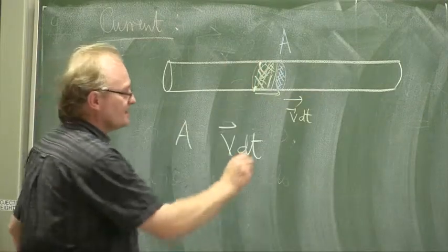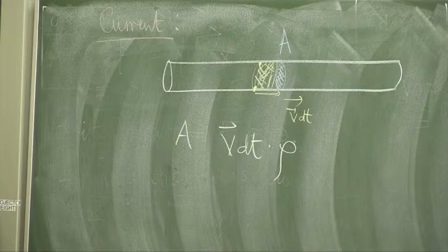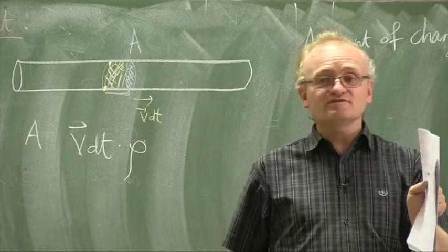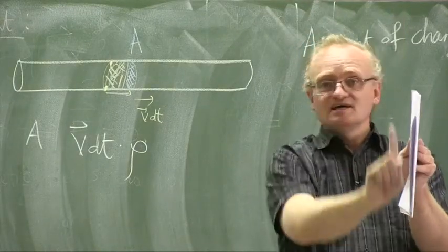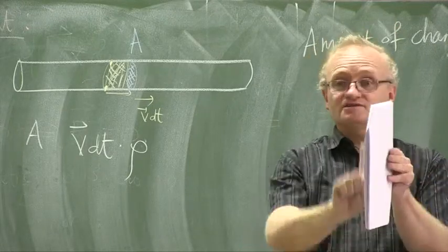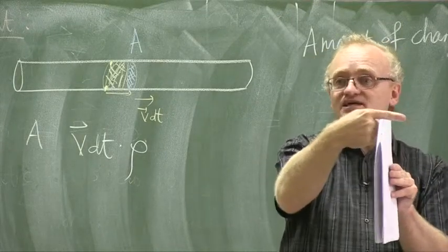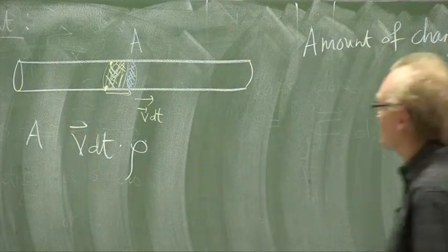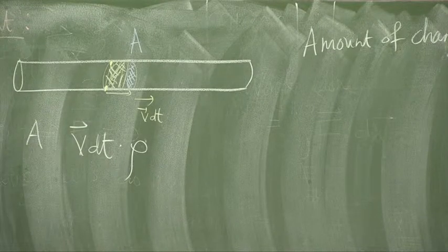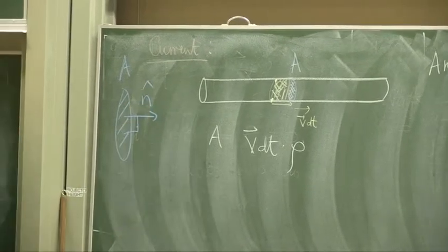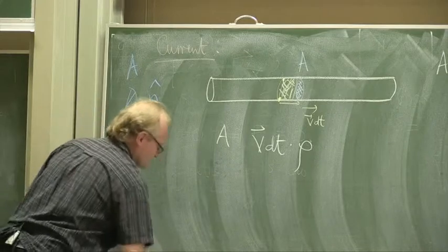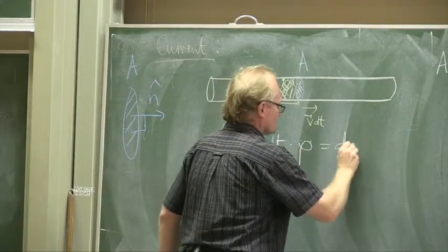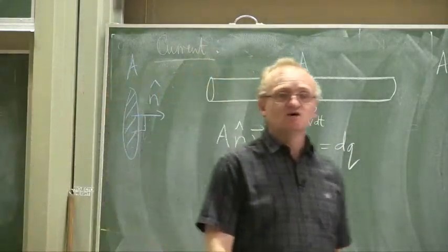Everything inside that volume passes, and we might multiply by the charge density — but that's not quite right. If the particles are moving with velocity V but going parallel to the surface, then no charge passes the area. So the only component of the velocity that counts is the component perpendicular to the area. Let's define a unit vector perpendicular to A called n-hat. The component of the velocity that's relevant is n-hat dot V, and this is the amount of charge dq that will pass area A per unit time.